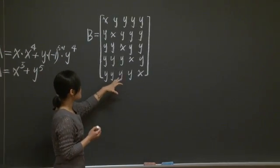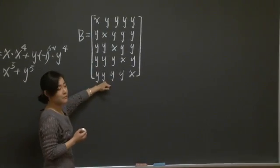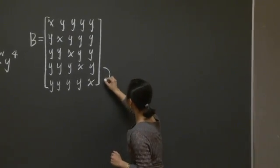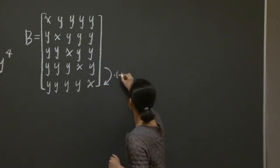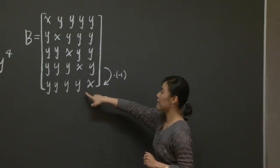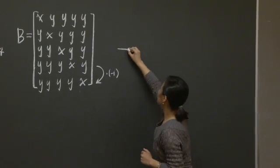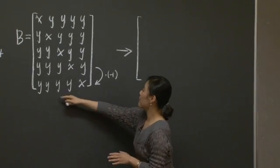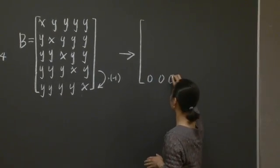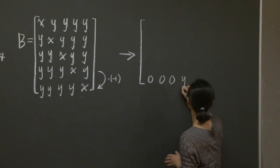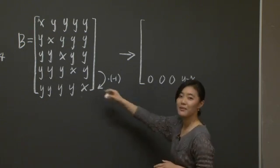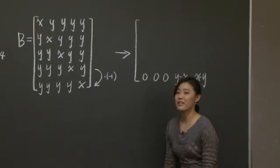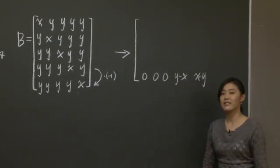So imagine if I subtract the fourth row from the fifth row. So if I do the following operation. So I subtract this row from the last row. Then the new fifth row should become the following. So this row will become 0, 0, 0, y minus x, x minus y. You see, just by the simple operation, I have introduced three zero entries at once.